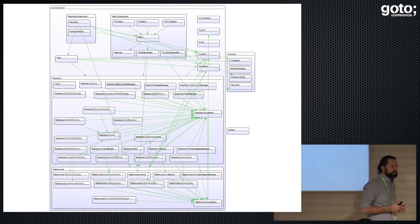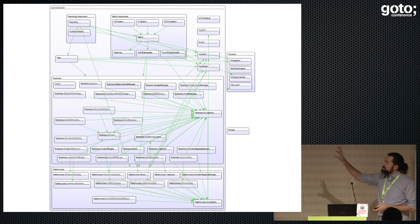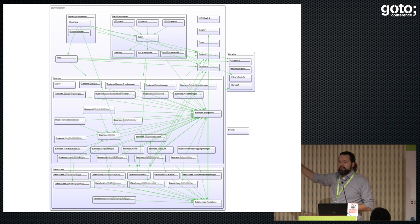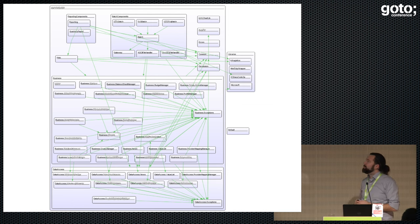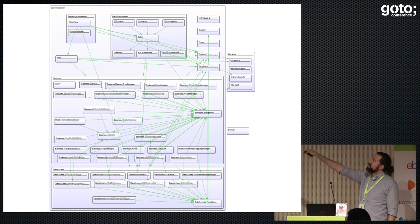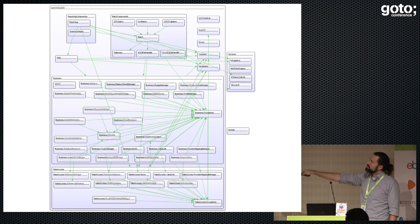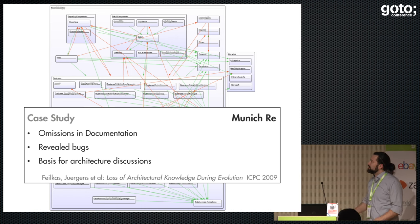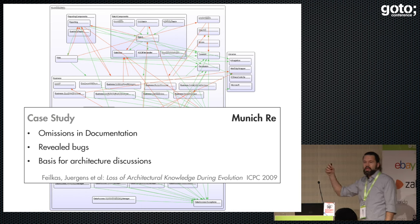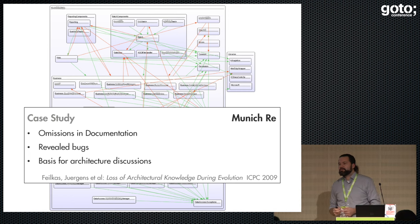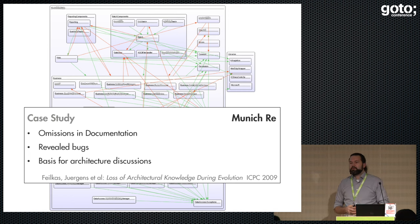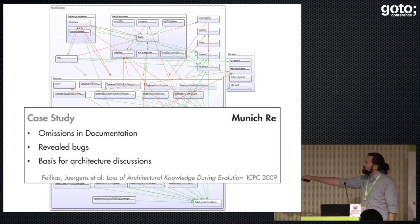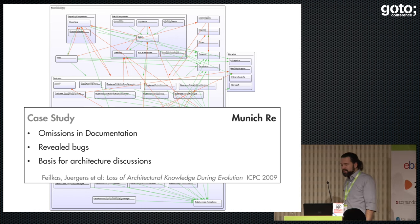This is a real example from a business information system — between half a million and one million lines of code. It's a typical architecture: a big UI component with subcomponents, a business logic component, and a data tier, with most policies going top-down. This is the intended architecture. When we run the tool to get the actual architecture, you see a lot of red arrows — every single red arrow is a dependency which exists in the code base but is not supposed to be there. There are even some going from the database layer up to the UI.